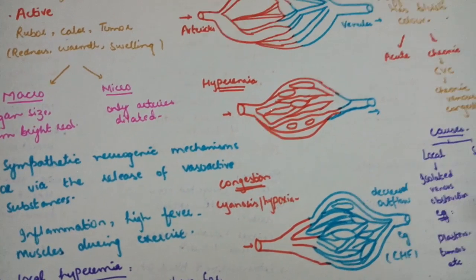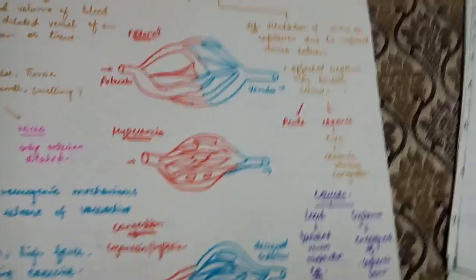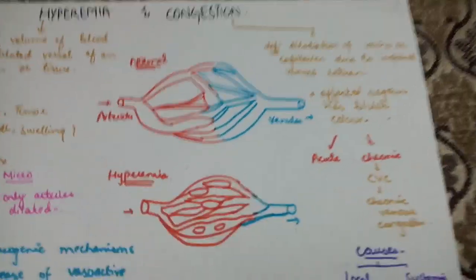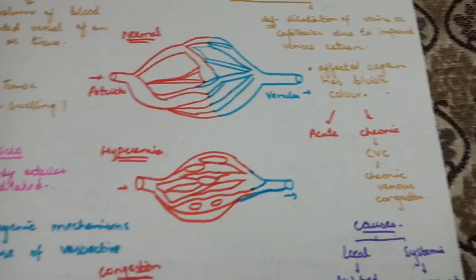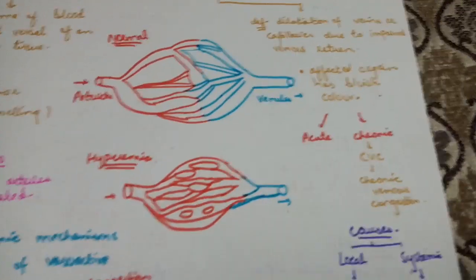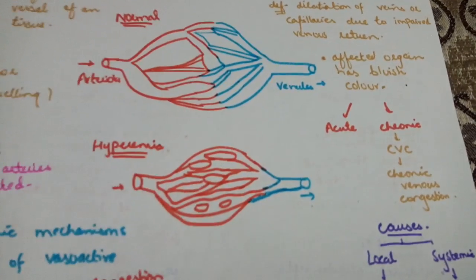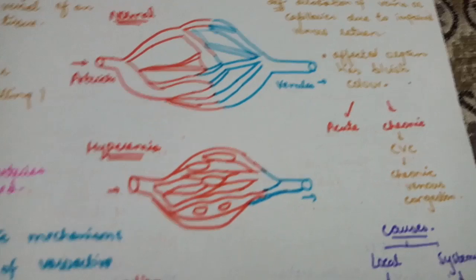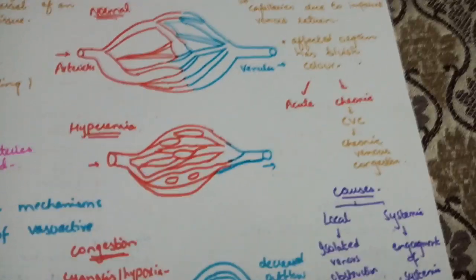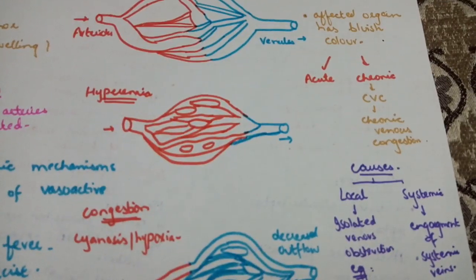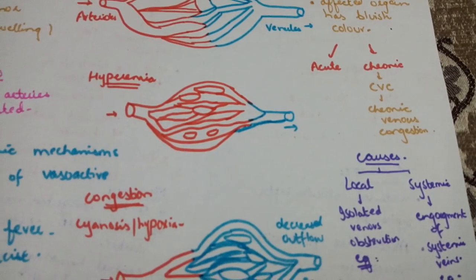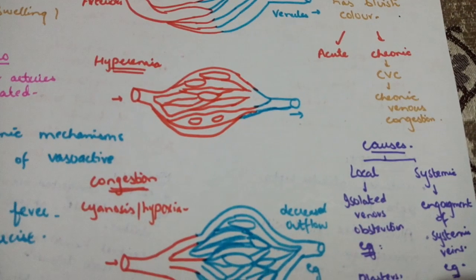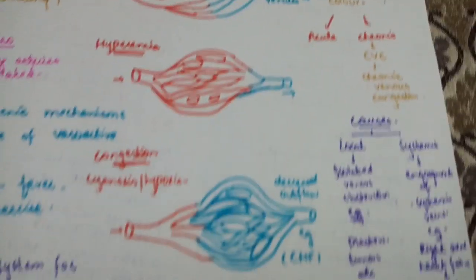Congestion involves engorgement of the veins and capillaries due to impaired venous return. The affected organ has a bluish color. It can be acute or chronic — for example, chronic congestion can lead to chronic venous congestion.